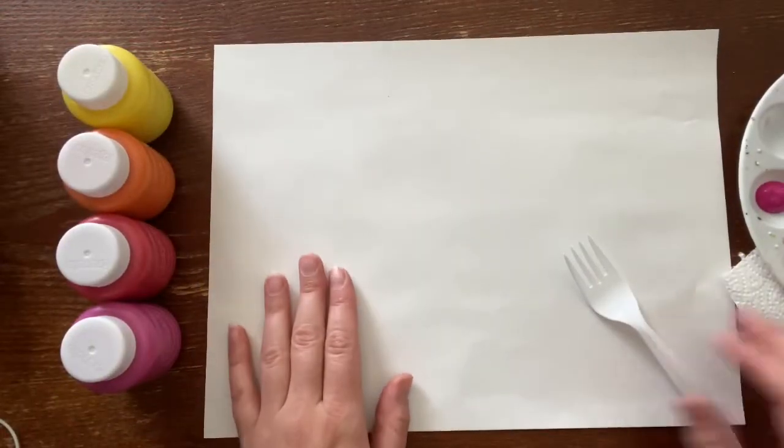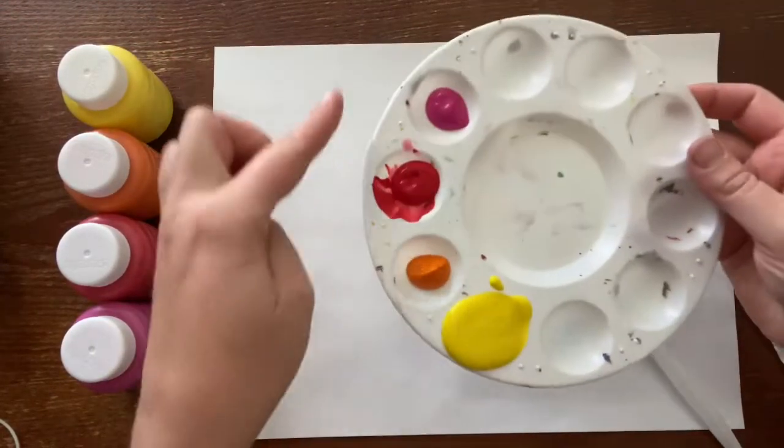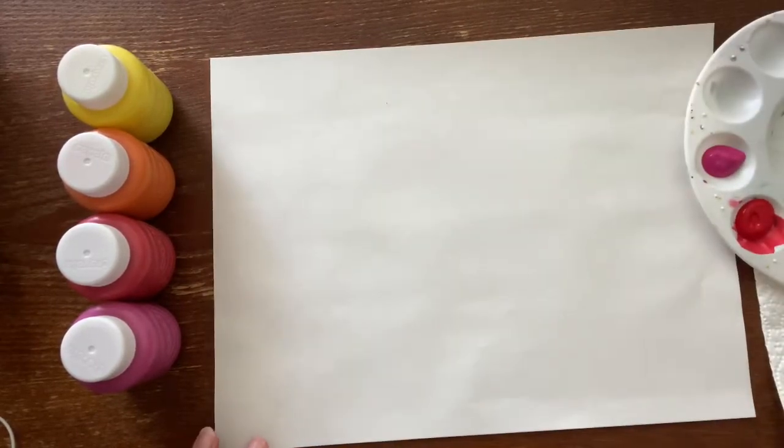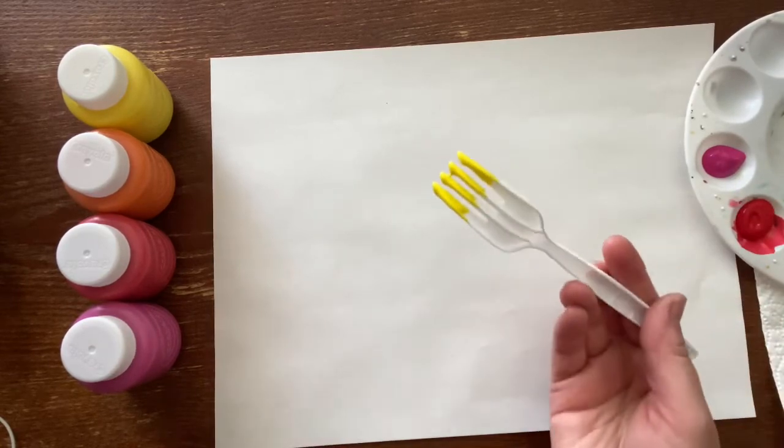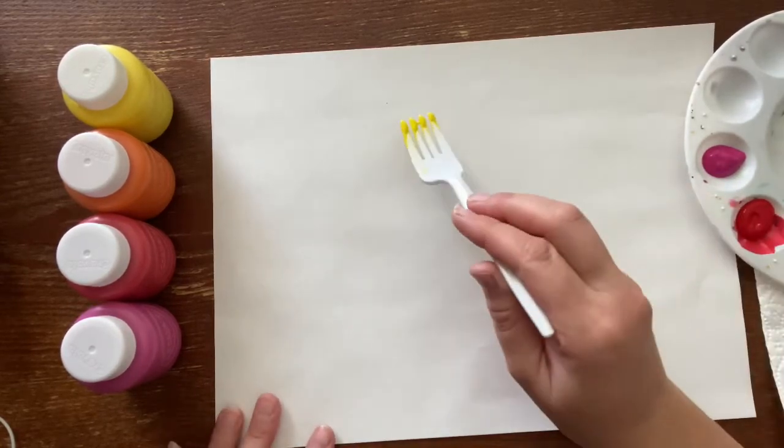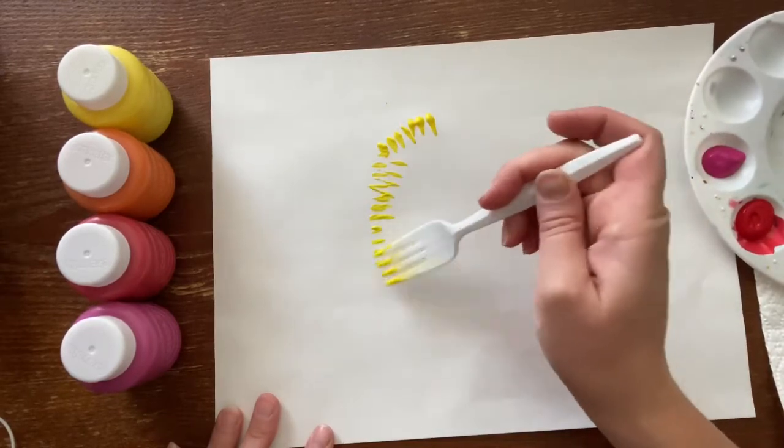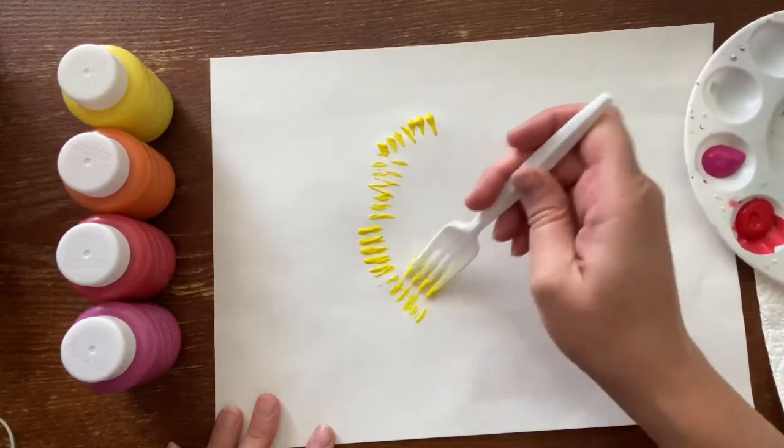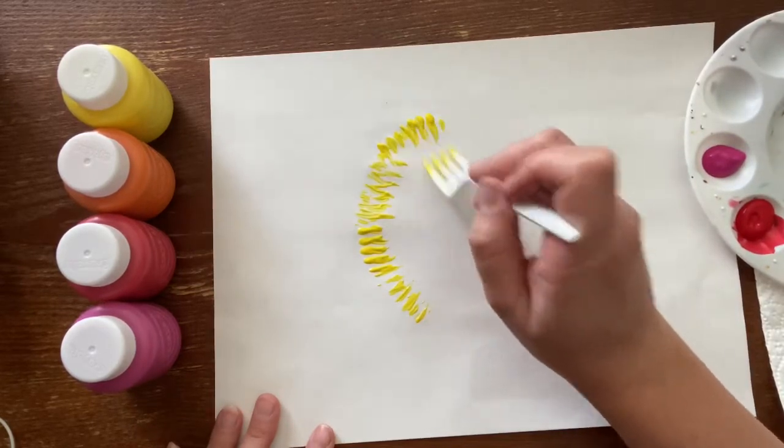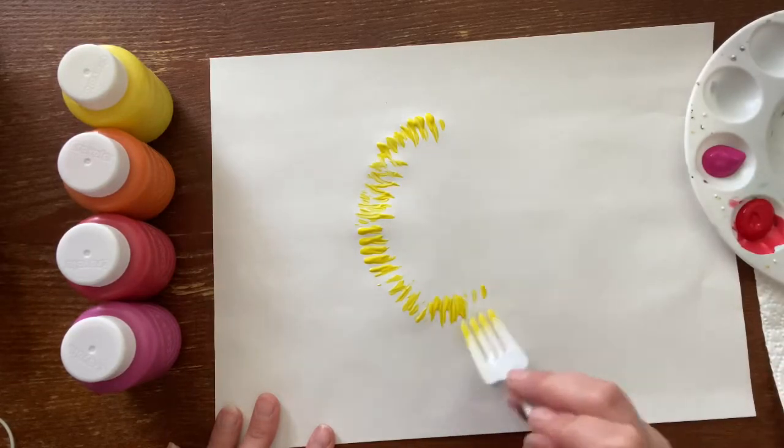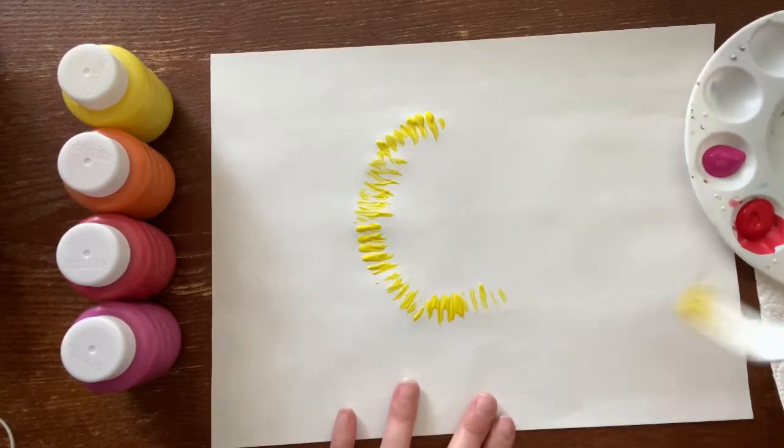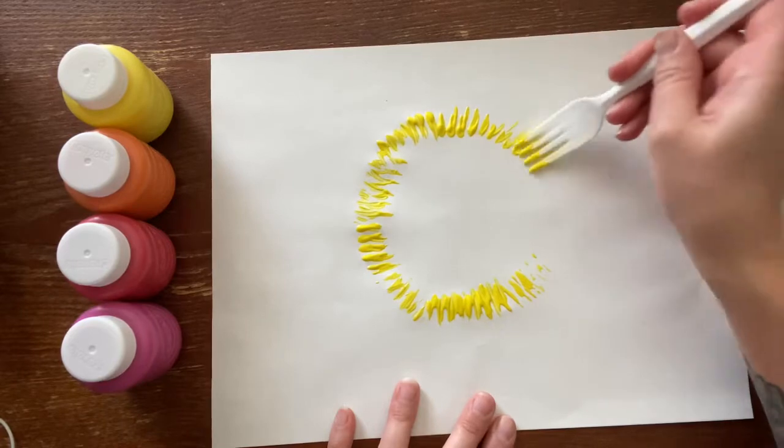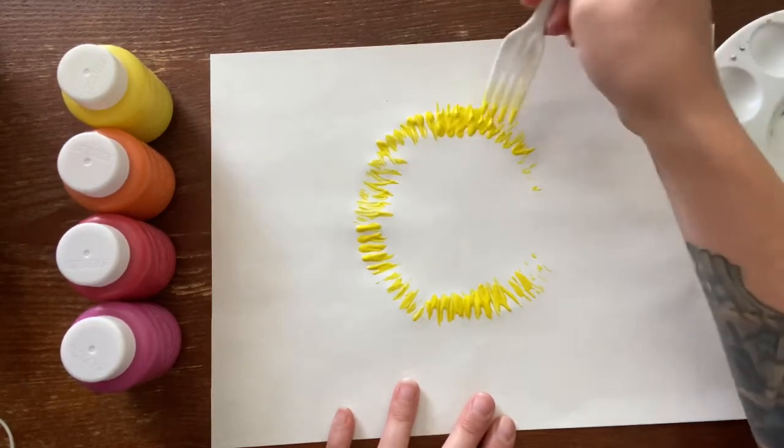Alright, so I have my paper ready. I chose the paint that I wanted to use for today, and I have my fork. Take your fork and you're going to dip it in the paint that you want to use, just the tips, just like that. And you are going to just start decorating in a circle. We are making a fish. Now this kind of fish is called a puffer fish, and puffer fish are known for their spikes.